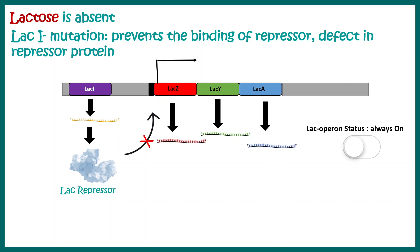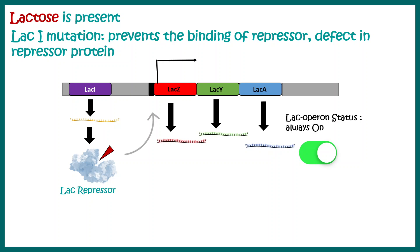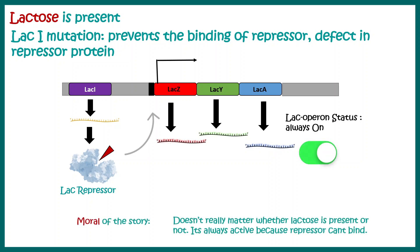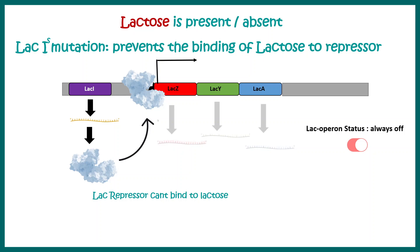The second mutation is lac I⁻. This prevents repressor binding because the defect is in the repressor protein itself — a faulty version is produced that cannot bind to the operator region. There is a mutation in the lac I gene producing a faulty repressor. When lactose is absent, the repressor cannot bind and suppress the operon, so the operon is constitutively active regardless of whether lactose is present or absent.